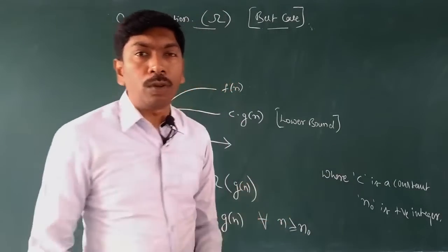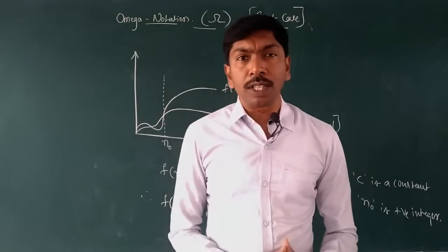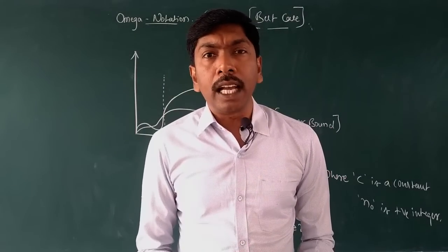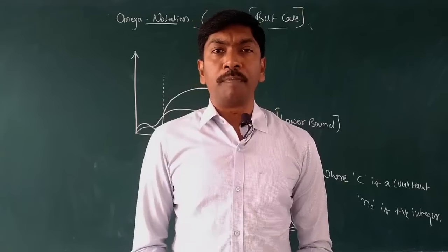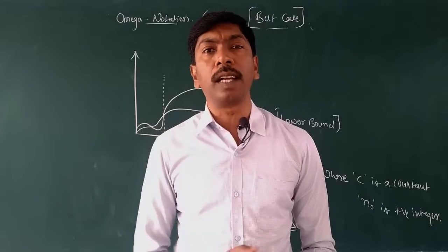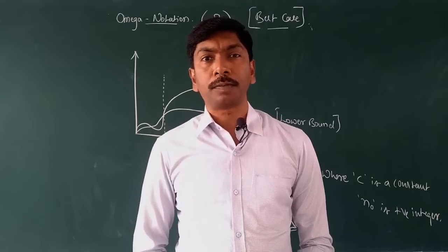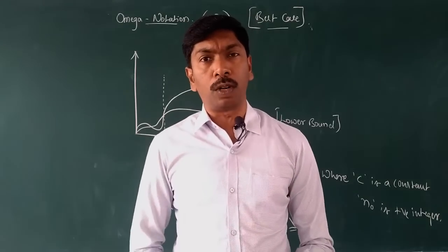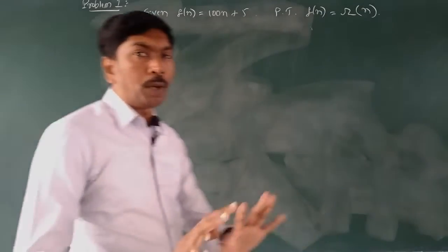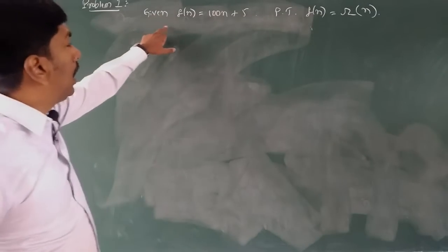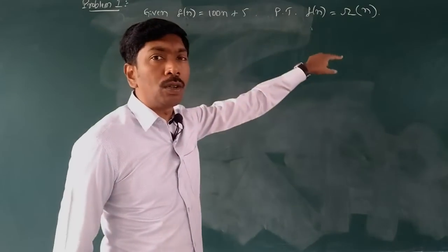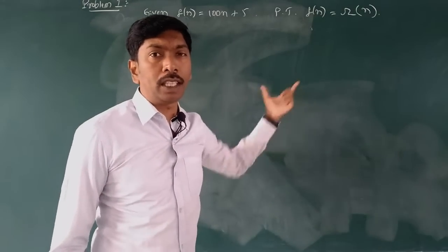This is called Omega Notation. So the definition: the minimum time taken by an algorithm for execution is called Omega Notation — it is the best case. Now let's look at some problems on Omega Notation. Problem one: given f(n) = 100n + 5, prove that f(n) = Ω(n).